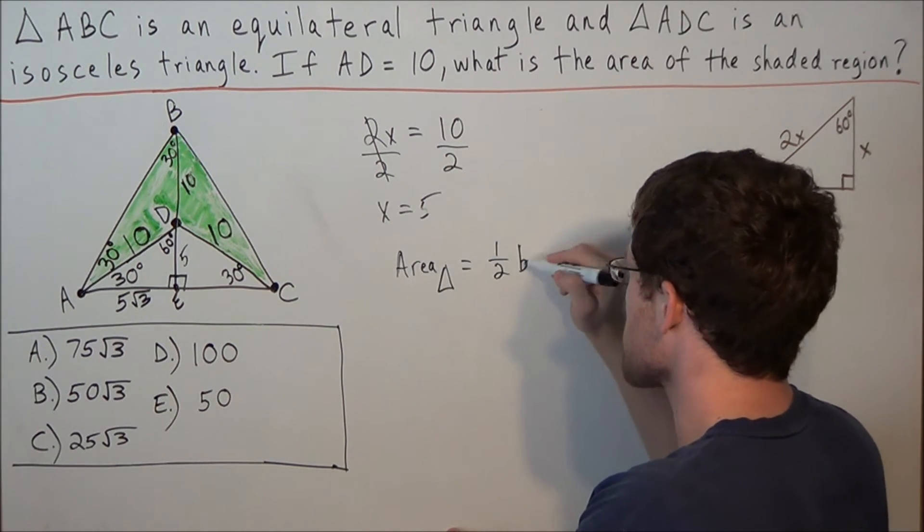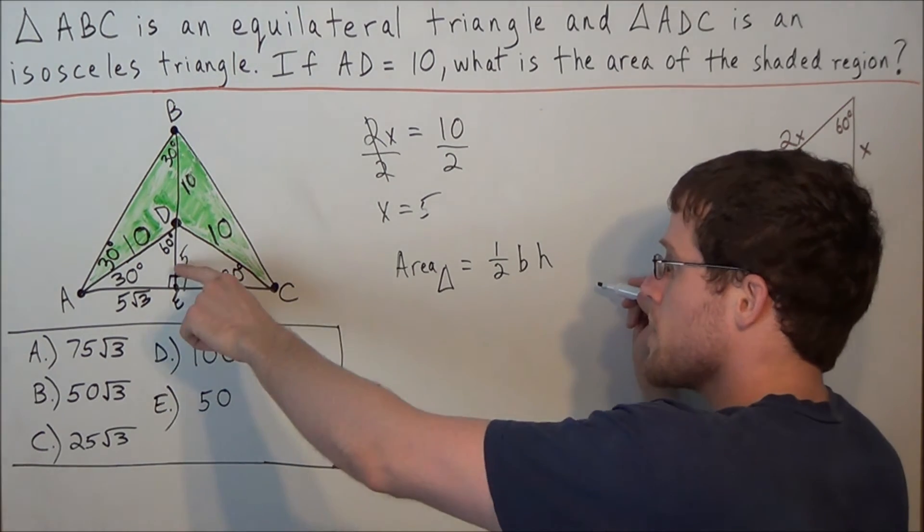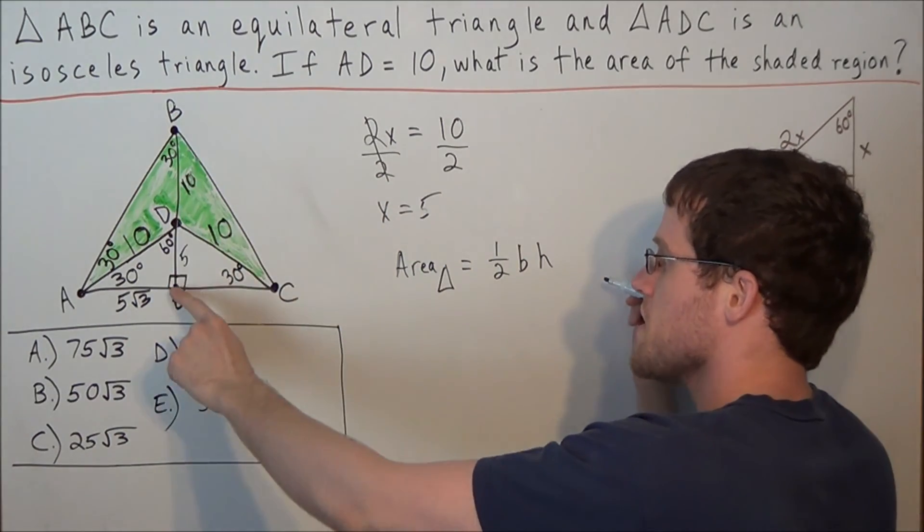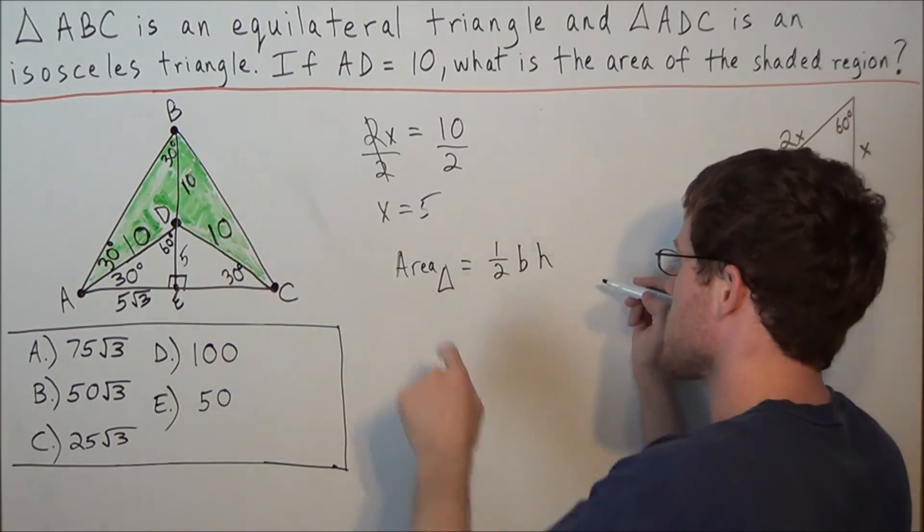So one half the base times the height. And now the height of the big triangle from B to D is 10, and from D to E is 5. So the entire height is 15.